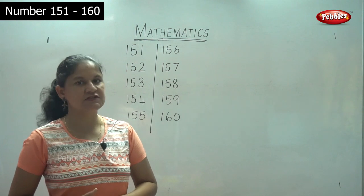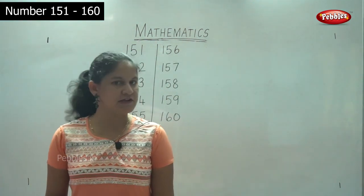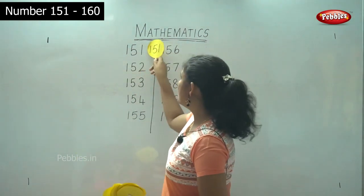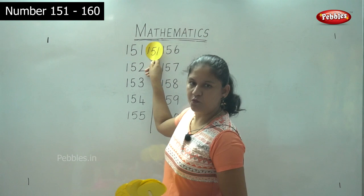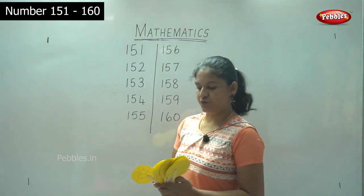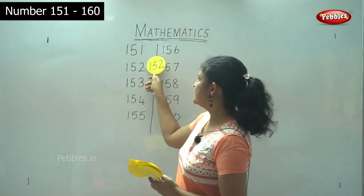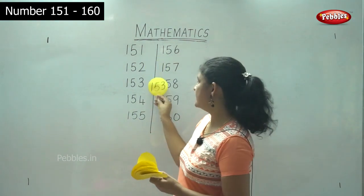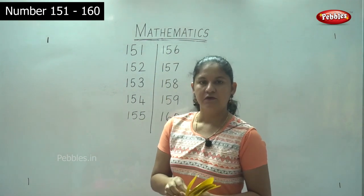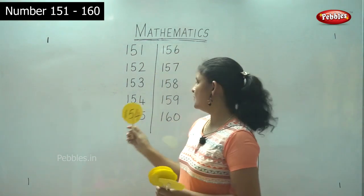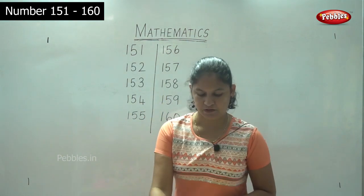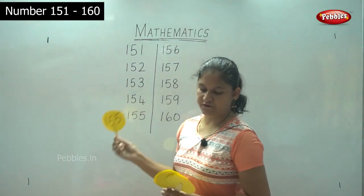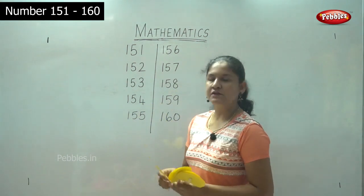So now you have learned to write the numbers. Next we will move on to identification of these numbers. So 151, 151, 152, 152, 153, 153, 154, 154, 155, 155.